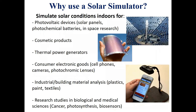So why do we use a solar simulator and not just any other light source that gives off white light? Solar simulators are used to provide illumination that closely resembles natural sunlight so that indoor testing can be conducted to check the performance of different devices and conduct different solar research projects. Characteristics of the simulated solar light have been regulated to comply with standards for different applications. These applications can be to test photovoltaic devices such as solar panels, photochemical batteries, or even to test cosmetic products. It could also be to test thermal power generators and consumer electronic goods such as cell phones, cameras, and photochromic lenses, or industrial and building materials such as plastics, paint, and textiles. Solar simulators can also be used for research studies in biological and medical sciences such as cancer research, photosynthesis studies, and biosensor analysis.